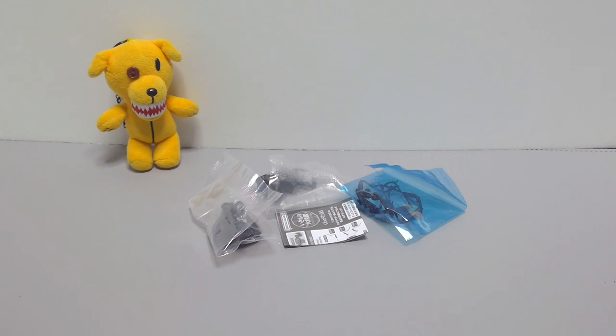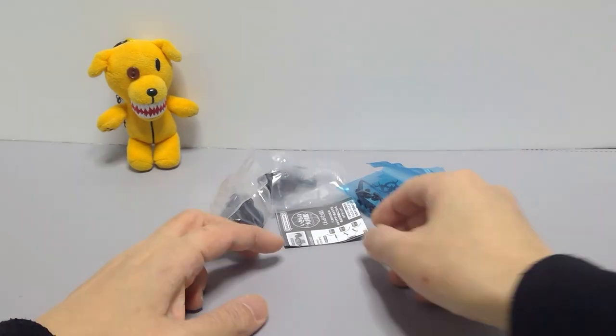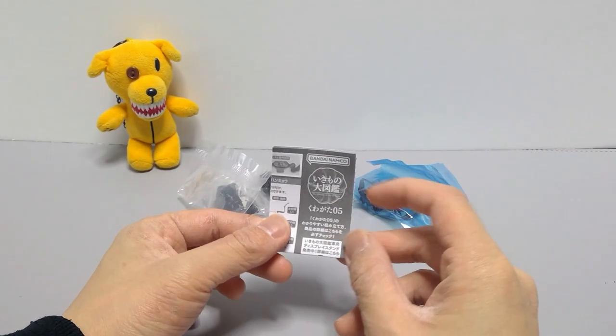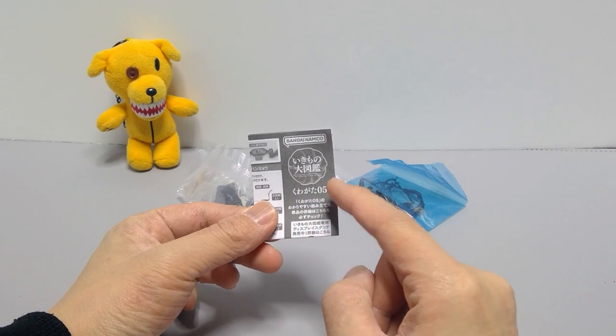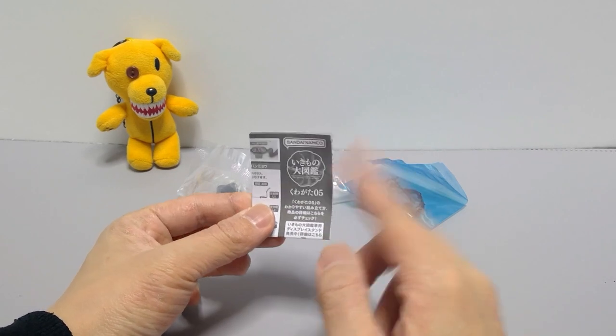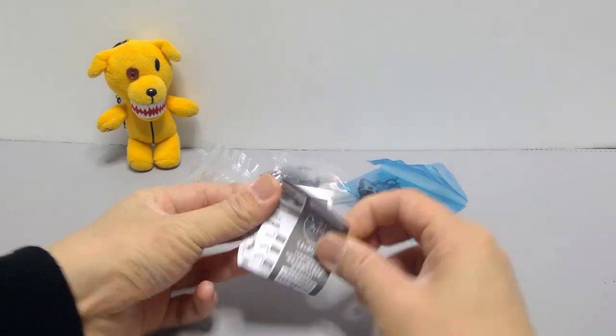Hey busters, welcome back to another capsule toy video. Today we'll be opening up the Oenma Hanmyo or the Manticora latipennis, a species of tiger beetle native to South Africa from the Ikimono Daizuka Living Encyclopedia Kuagata 05 stag beetle set five.